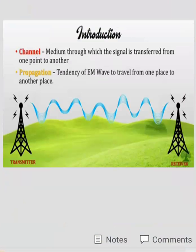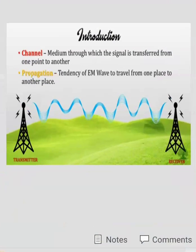As shown in the figure, there is one transmitter and one receiver. The channel is the medium through which the signal is transferred from transmitter to receiver. This medium of propagation may be a wired medium or wireless medium, but in radio wave propagation the medium is always wireless. Propagation is the tendency of an electromagnetic wave to travel from transmitter to receiver.